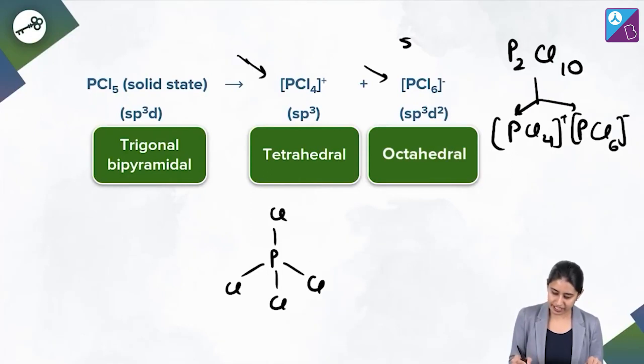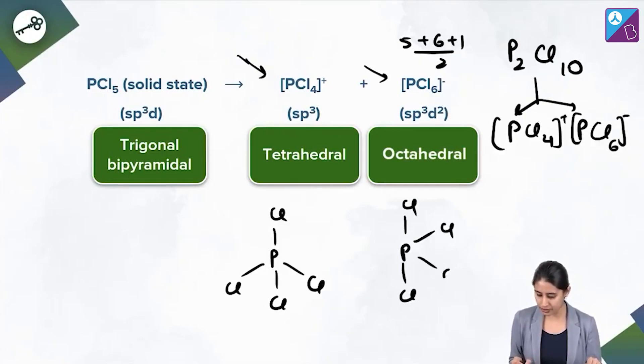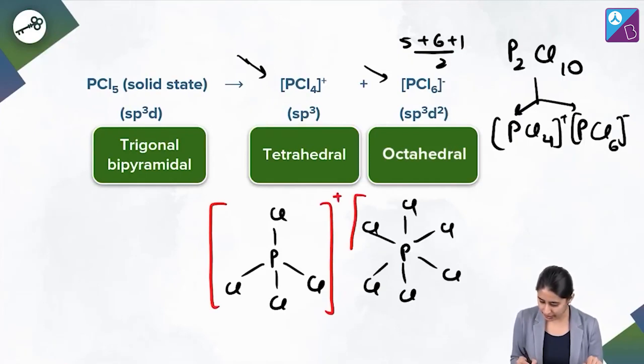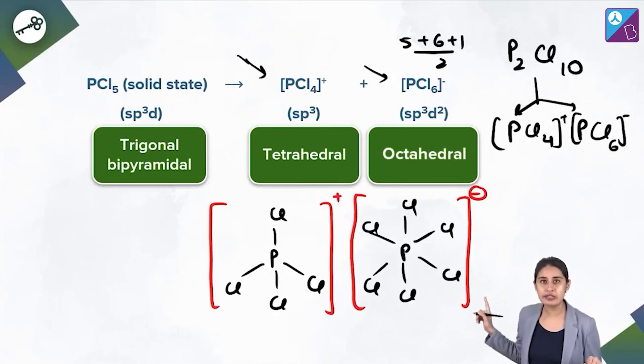That means 5 + 6 + 1/2, 6, 7, 8, 9, 10, 11, 12/2, that means sp3d2. That means it is existing like octahedral. Do not forget to mention the charges that it holds, so plus here and a minus here. Don't forget. PCl5, PCl5, clear, it exists in ionic state as PCl4+ and PCl6-.